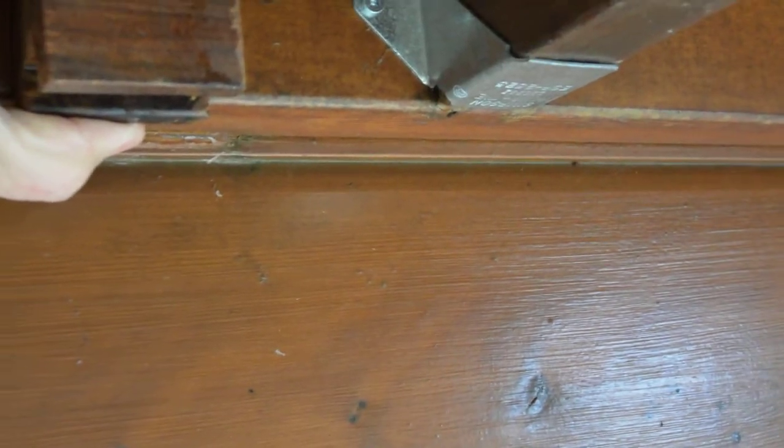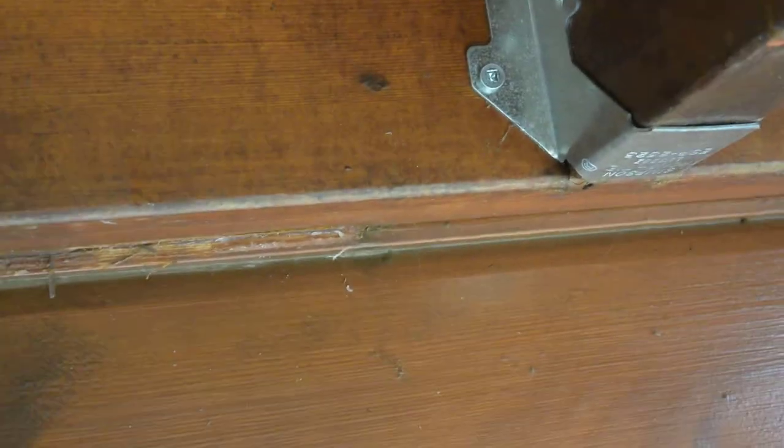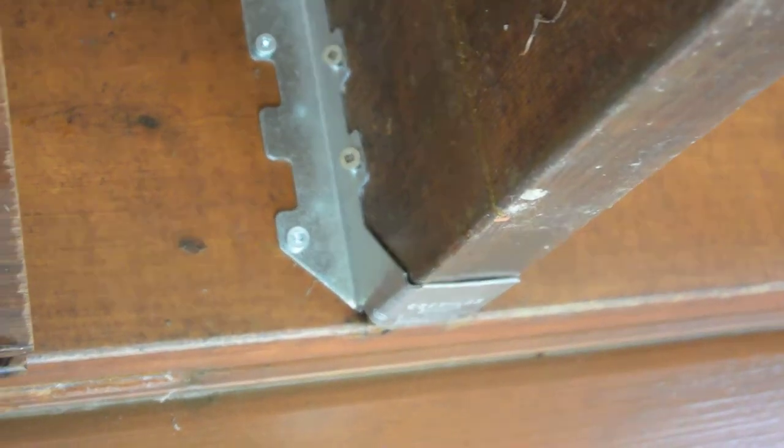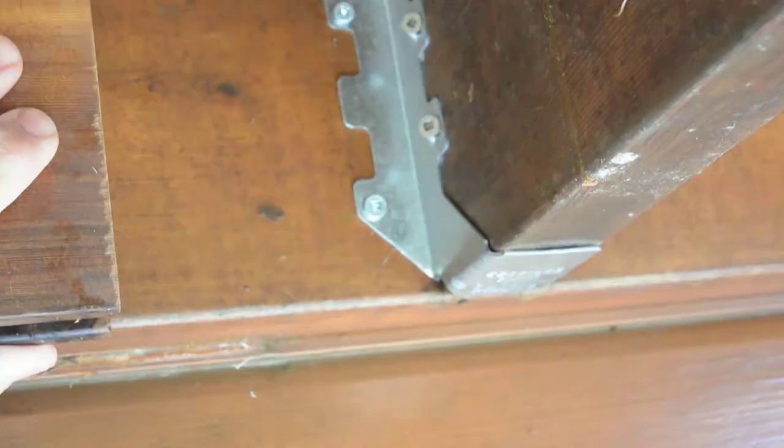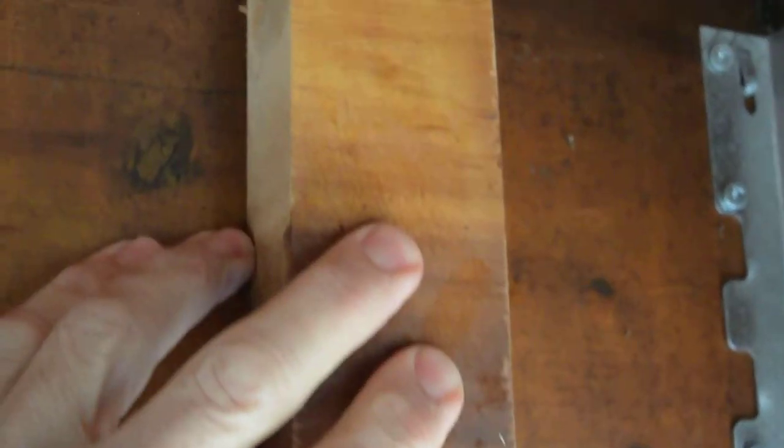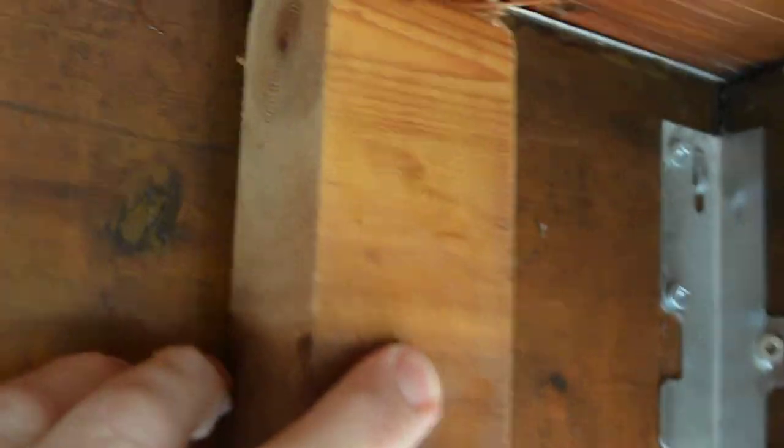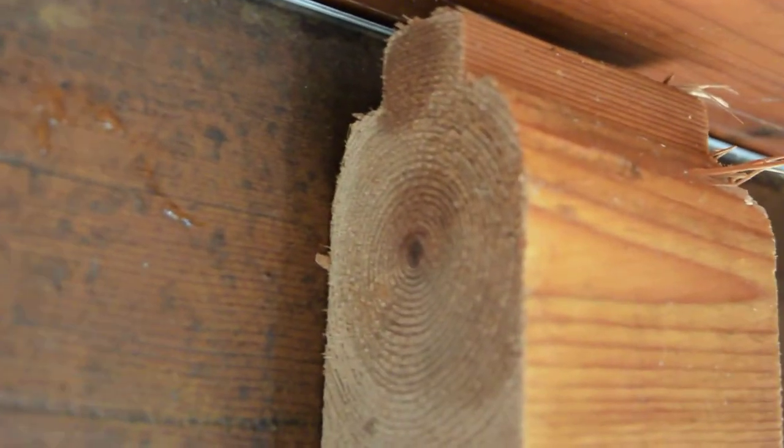I just want to demonstrate how the siding sits behind this 2x8 that joins the porch to the cottage, and the 2x8 tongue and groove, you can see, sits right about here on the back side.